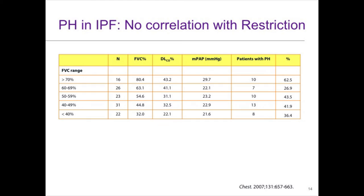If you look at patients whose FVCs were greater than 70% and compare them to those less than 40%, the numbers are quite different — 29%, 21%, and 62% versus 36%. This is a paradox: the less restriction, the more PH and the more severe. The only explanation is that patients with pulmonary hypertension in the context of early ILD come to clinical attention earlier — hence the higher prevalence seen in the greater-than-70% group. The less-than-40% group shows a survival effect: those patients who develop PH don't survive to develop severe enough restriction. They're lost along the way as they develop more restriction in the context of their pulmonary hypertension.